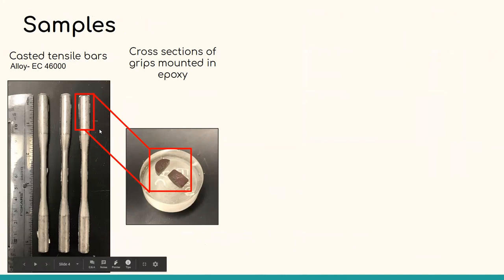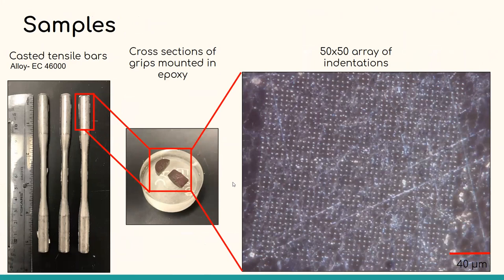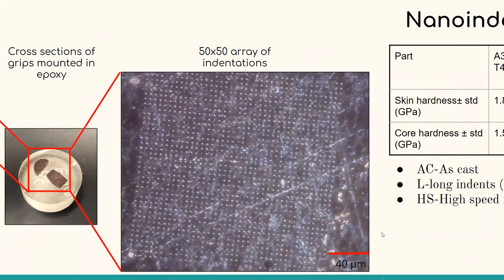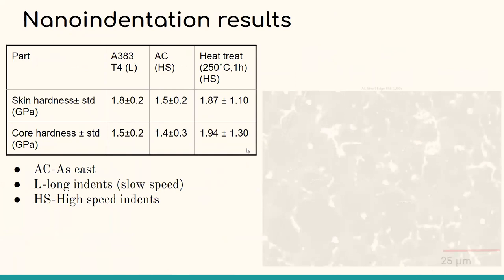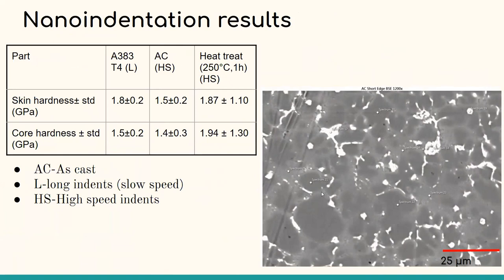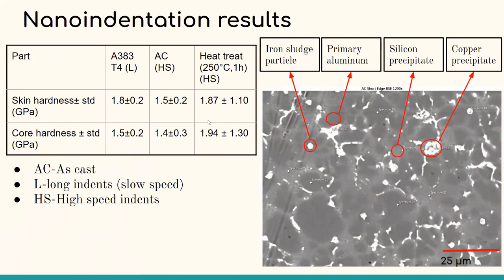Our samples were prepared from tensile bar grips prior to tensile testing, and two types of tests were performed. The long test involved deep indents testing a mixture of phases, and the high-speed tests shown on the right involved shallow indents that tested a single phase. The table shows a statistical difference in skin and core for A383 but not the as-cast or heat-treated parts. Hardness measurements varied greatly due to the presence of different phases shown on the right. Smaller indents showed more variance due to measuring separate phases as opposed to larger indents that took a mixture of many.